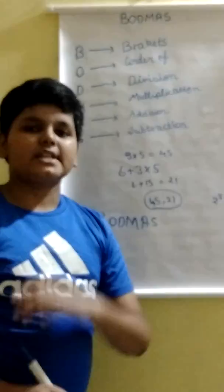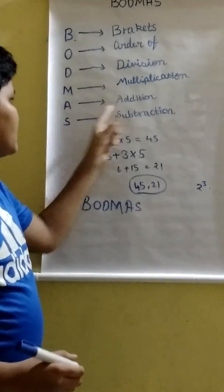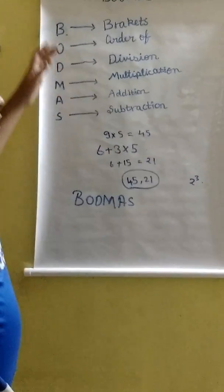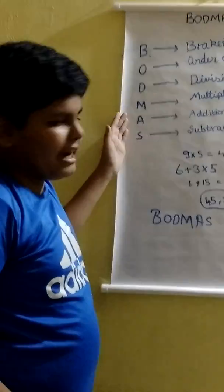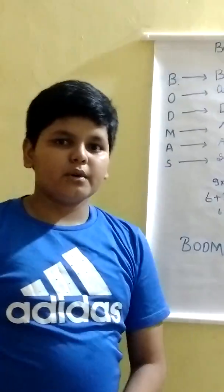D stands for division. M stands for multiplication. A stands for addition. And S stands for subtraction. This is the order in which we have to do any problem if it is given to us. Now, let's see more about brackets.